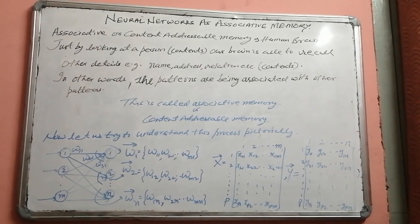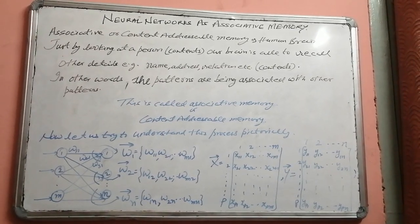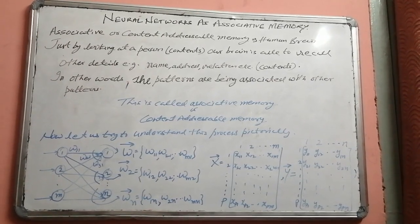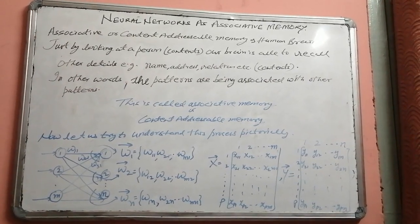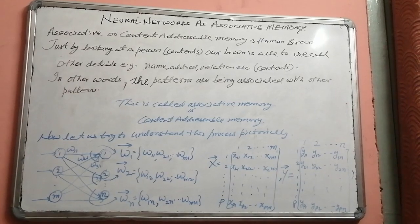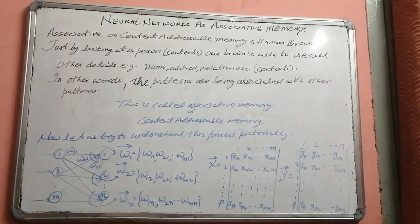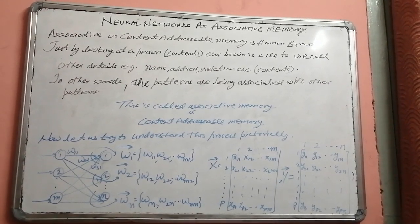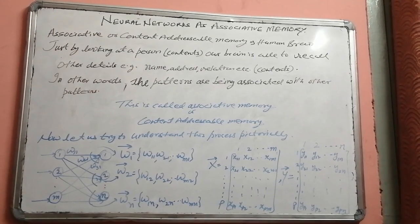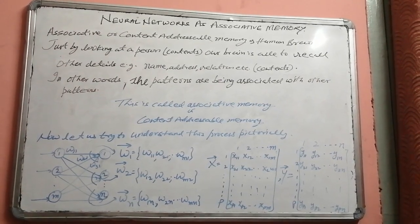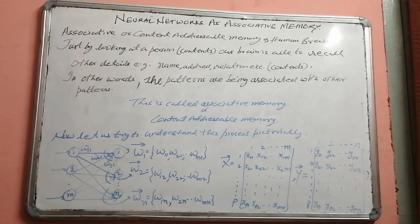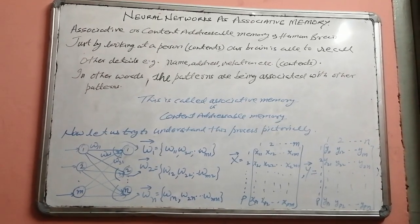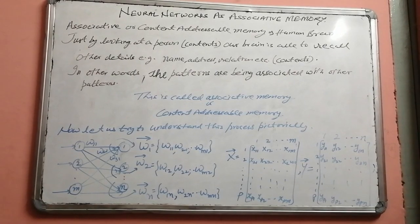In this whole storage process, the human face comes as input — the content comes to us as input. And their characteristics, address, and name are the content generated as output. So content was coming in and content was going out — that is the concept named content-addressable memories.